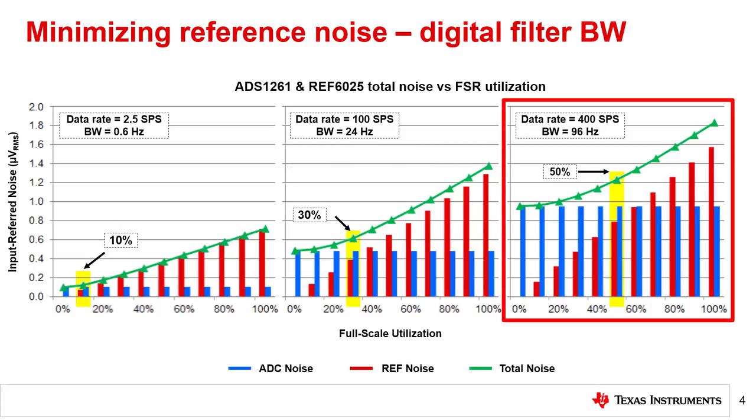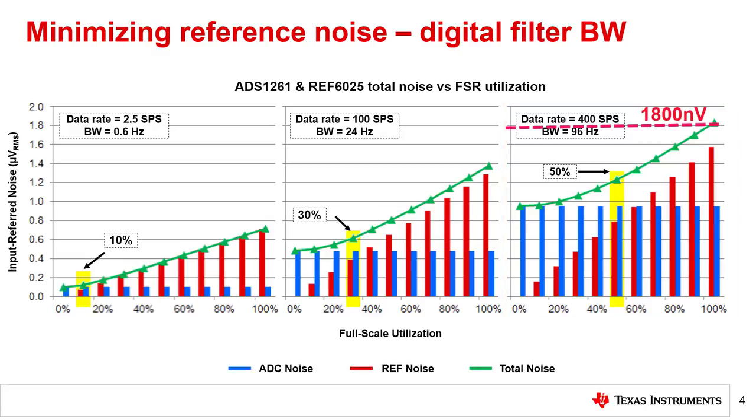The last plot shows the noise performance when the ADC's digital filter bandwidth is 96 hertz and has the highest total noise at full scale.